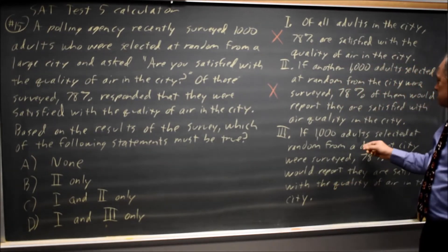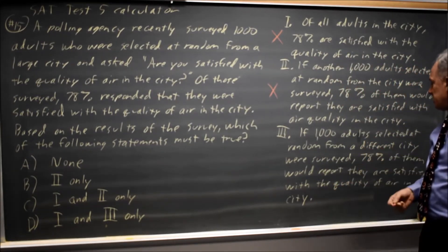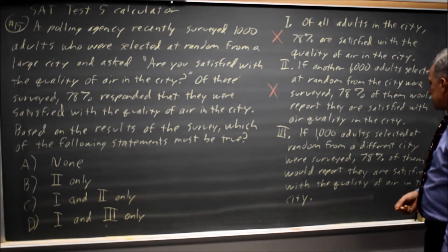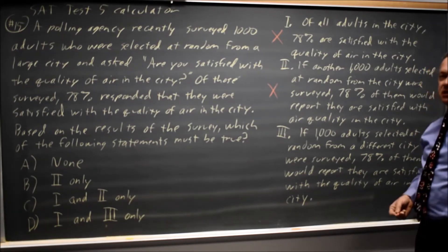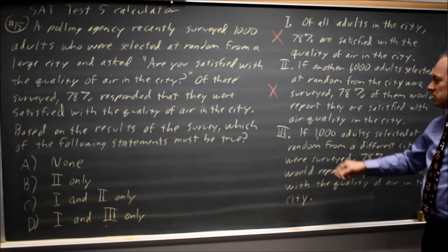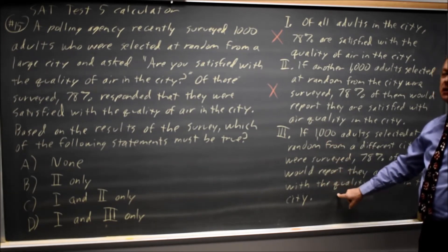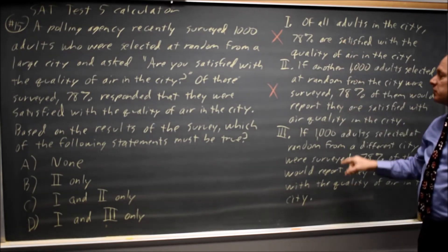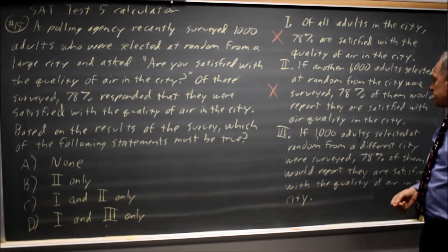Choice 3. If 1,000 adults were selected at random from a different city and surveyed, 78% of them would report that they were satisfied with the quality of air in their city. This one makes no sense at all. The satisfaction in one city should not be a good predictor of air quality satisfaction in another city.